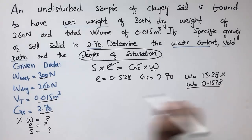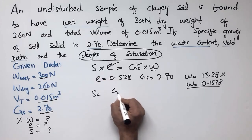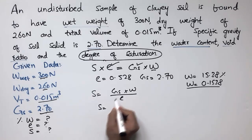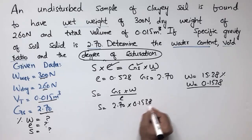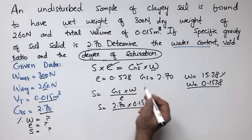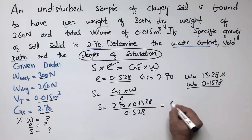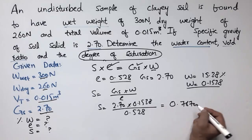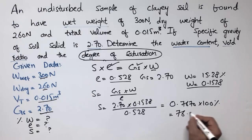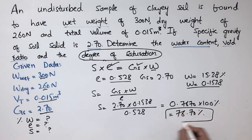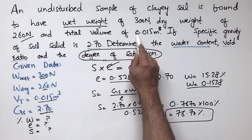Plugging all values into S = (Gs × w) / E: S = (2.70 × 0.1538) / 0.528, which comes out to 0.7670. Multiplying by 100%, the degree of saturation is 76.70%. This is the degree of saturation of this soil sample with wet weight 300 N, dry weight 260 N, and total volume 0.015 m³.